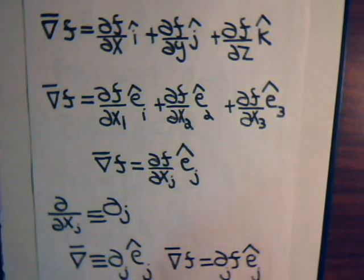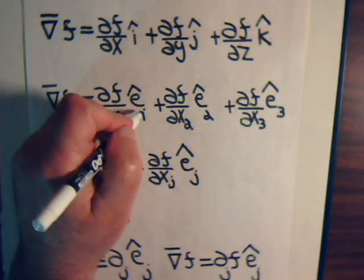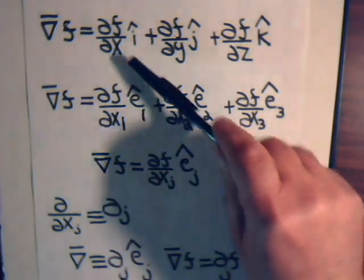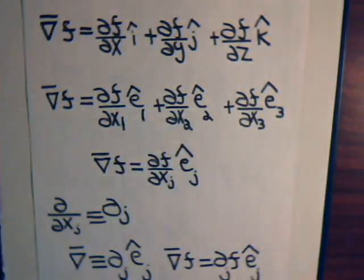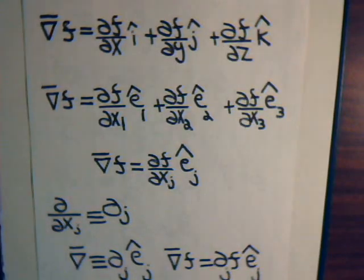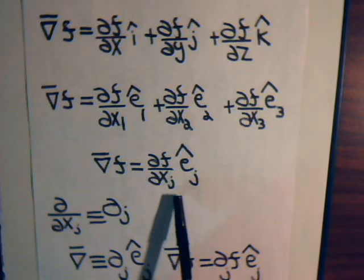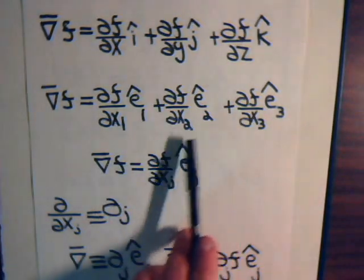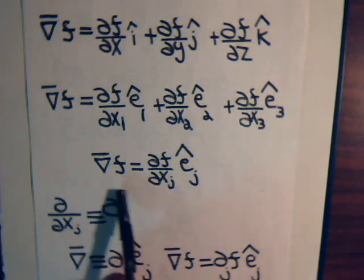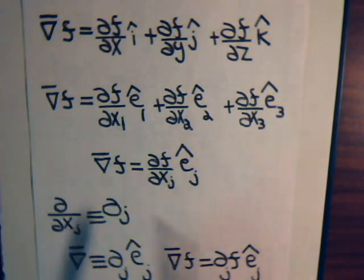The unit vector e1 is the same thing as the unit i vector, just as the unit vector e2 is the same thing as the j vector. So this sums over j1, j2, and j3. Here's another way that we can express the gradient vector.